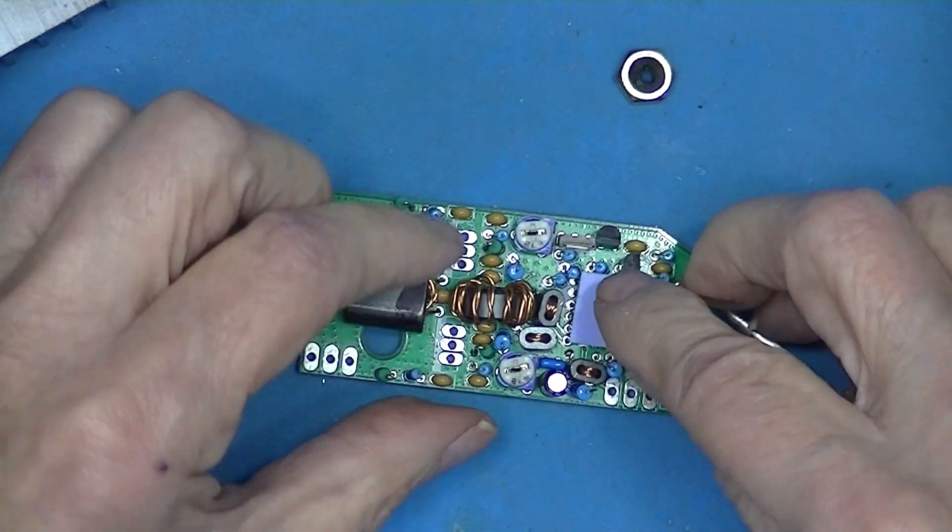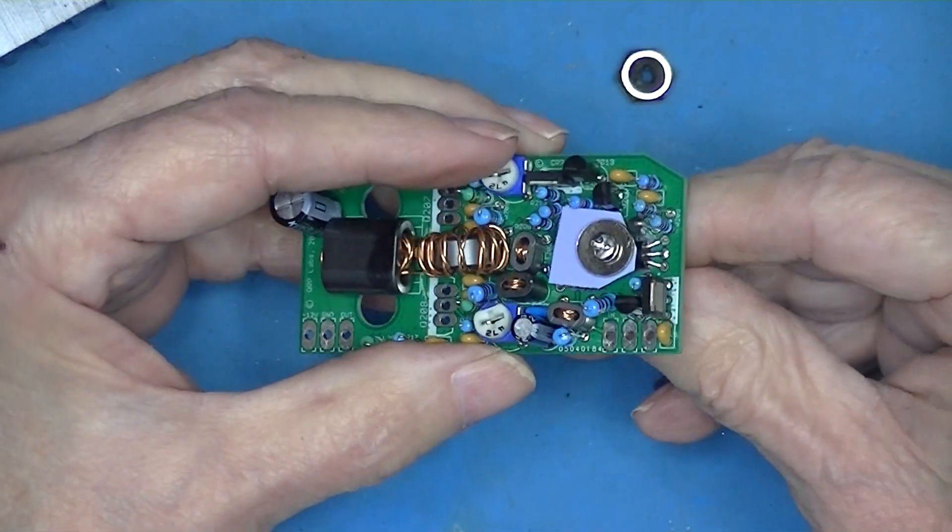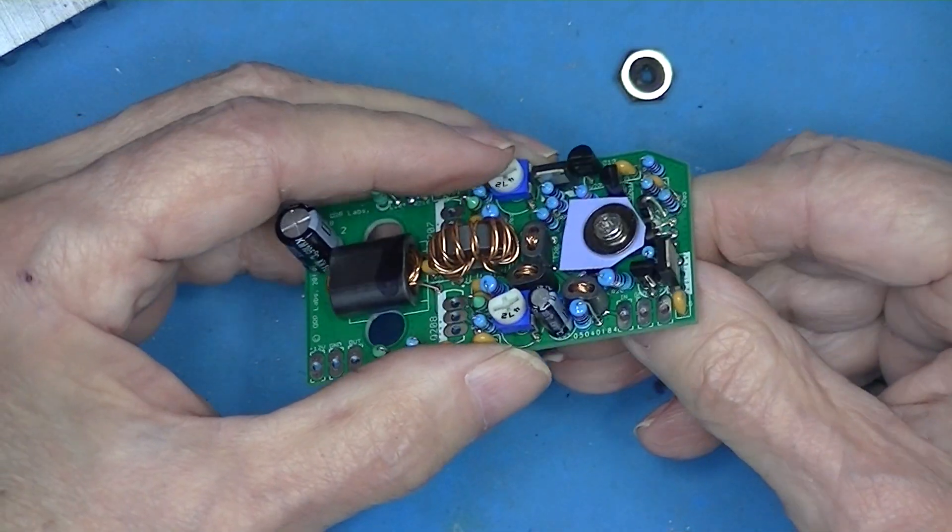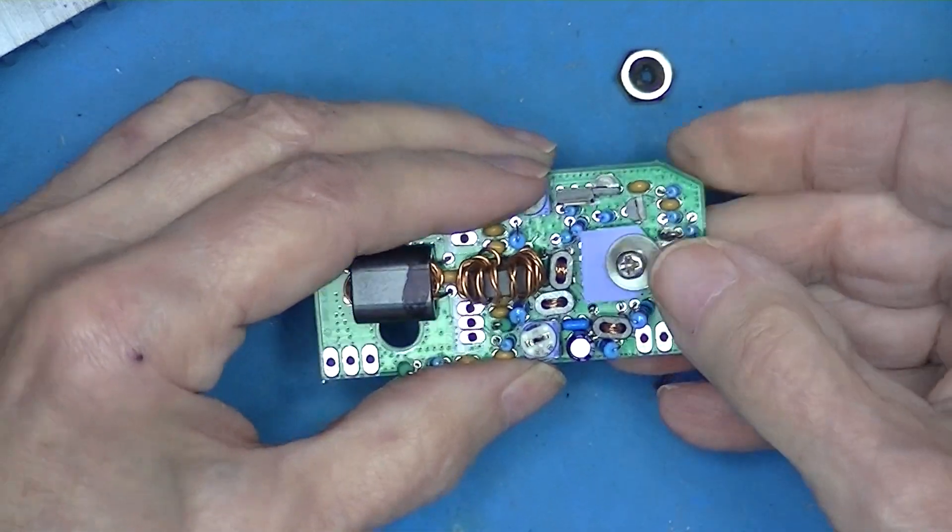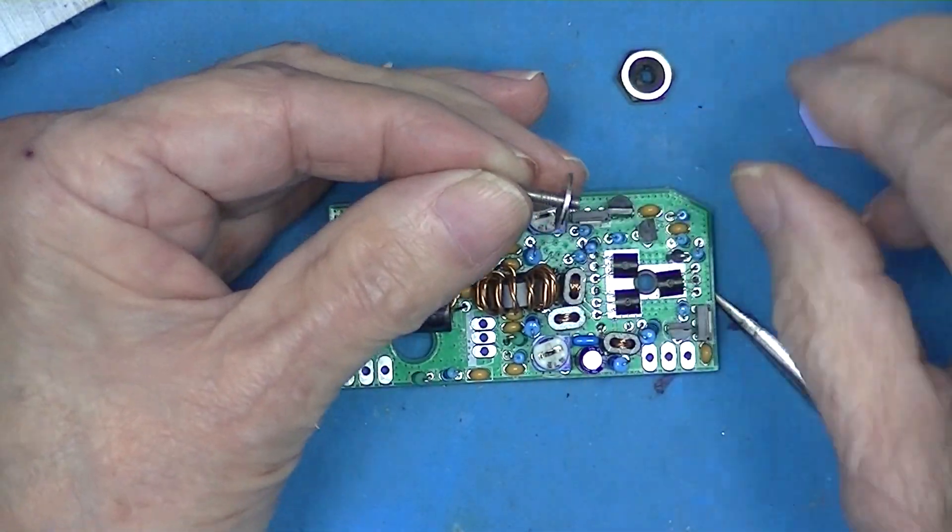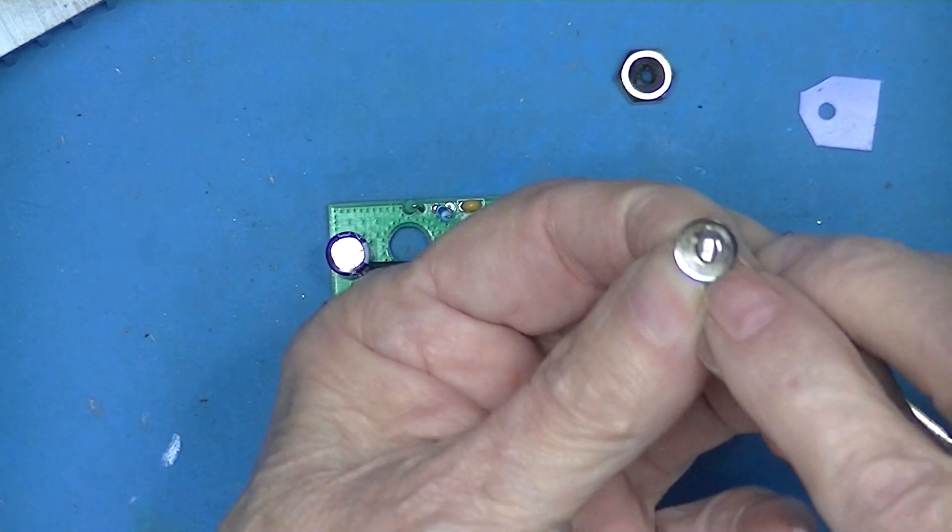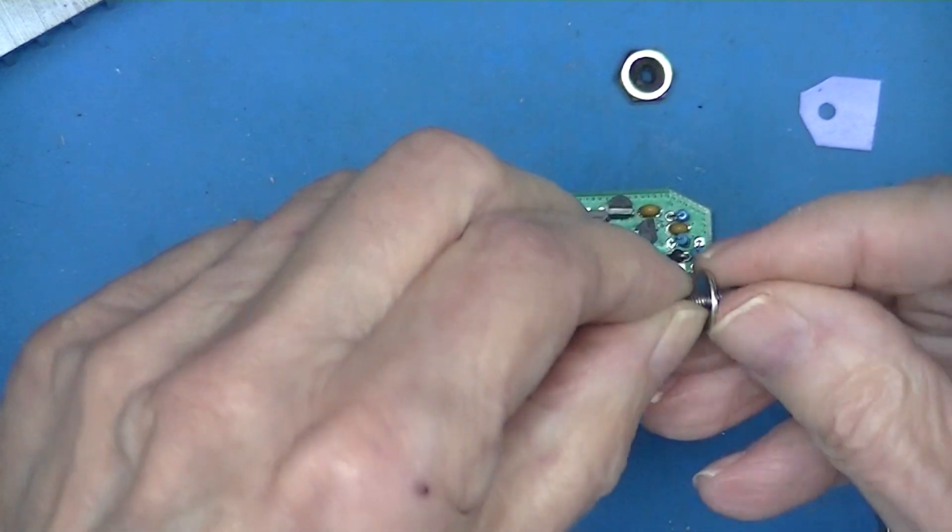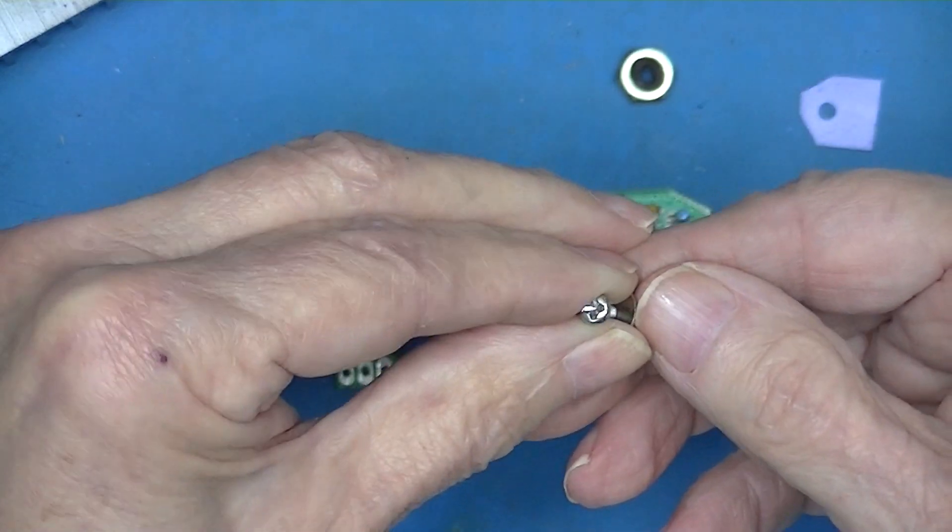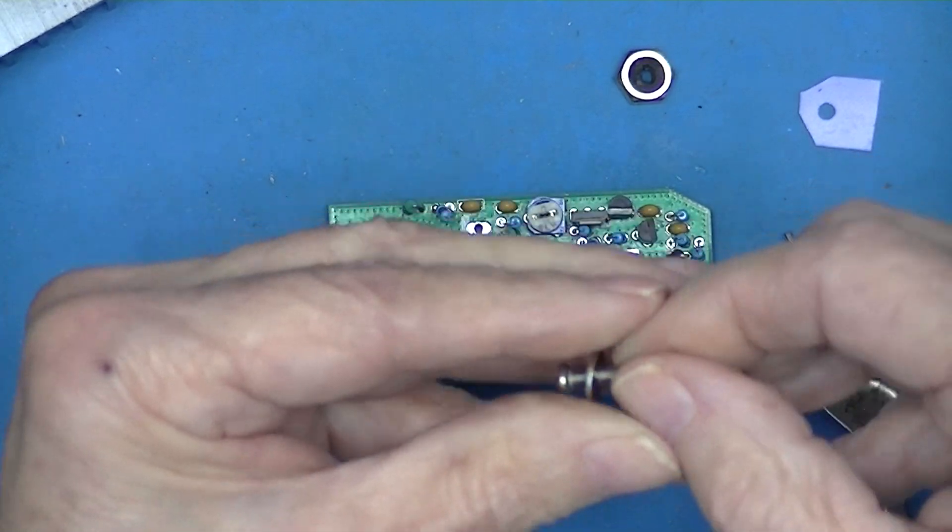Stick the screw through. Looks fine. Now this washer is sort of, most washers are like this. It's punched. I have a rounded edge on one side and a sort of squarish edge on the other. Put the rounded side down.